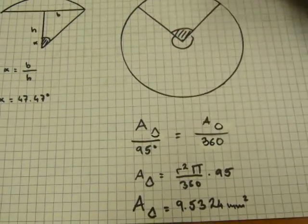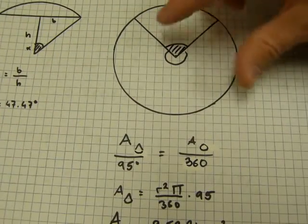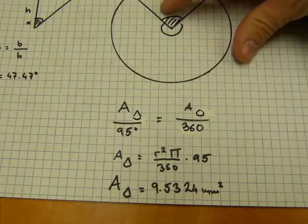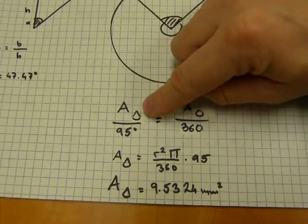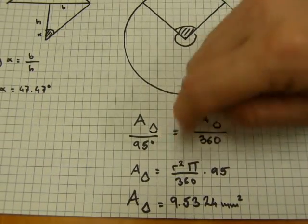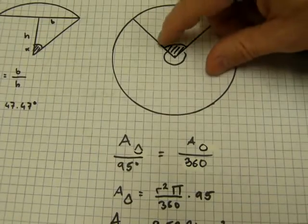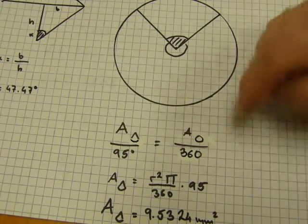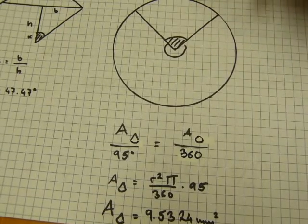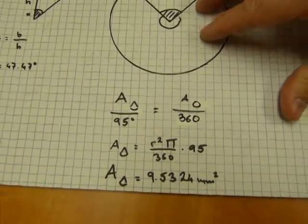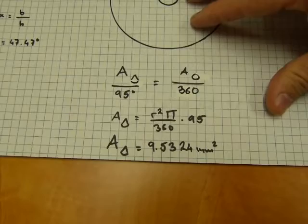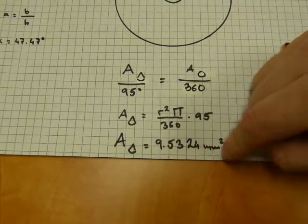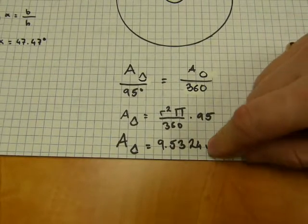To get the area of this sector I used ratio and proportion. The area of the sector is proportionate to the 95 degrees, its angle of turn, and the area of the full circle is proportionate to its full 360 degree turn. So when you do your math like so you'll end up with an area of that much for the sector.